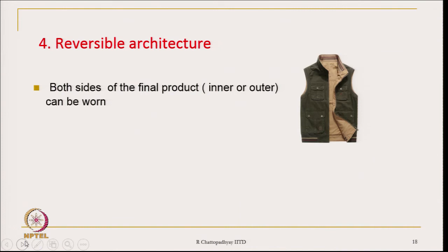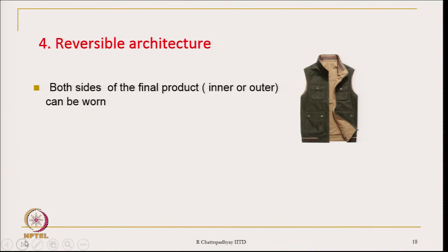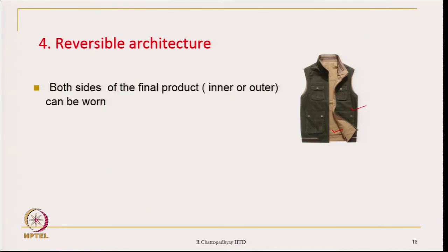Another interesting architecture is reversible. Many people use garments which are reversible — both the inner side and outer side can be used by the user. For this garment, the outer and inner sides have two different colors. A person can use the same jacket with two different colors — one day dark green and the next day the reverse side. It gives the feeling of having two jackets when you actually have one.